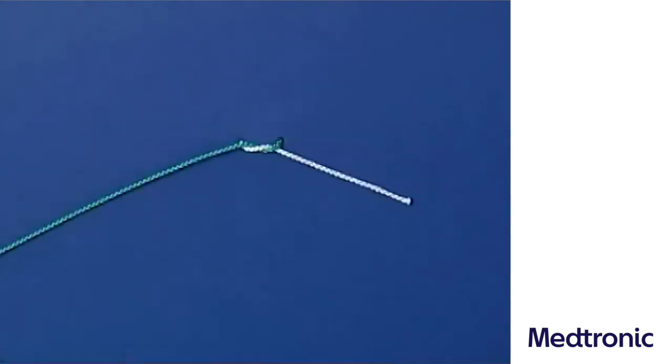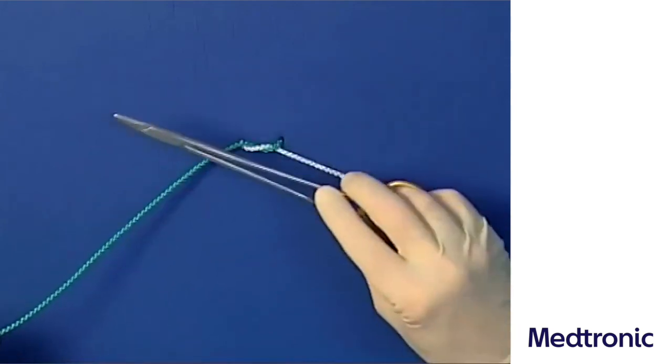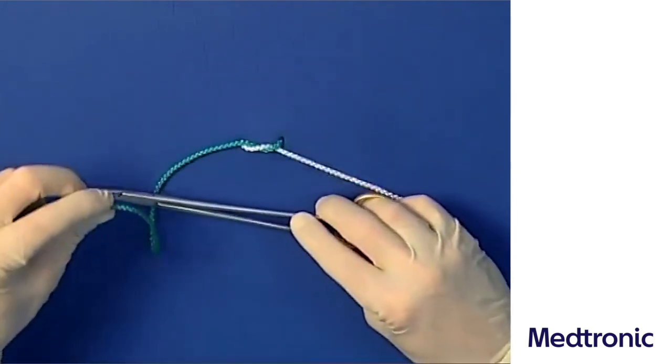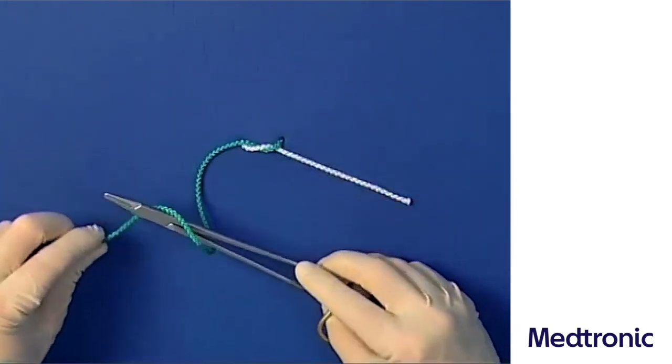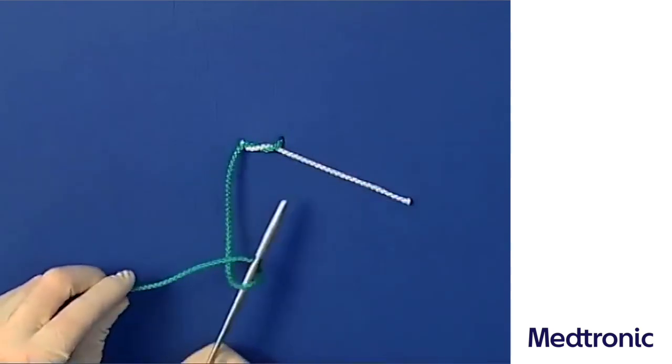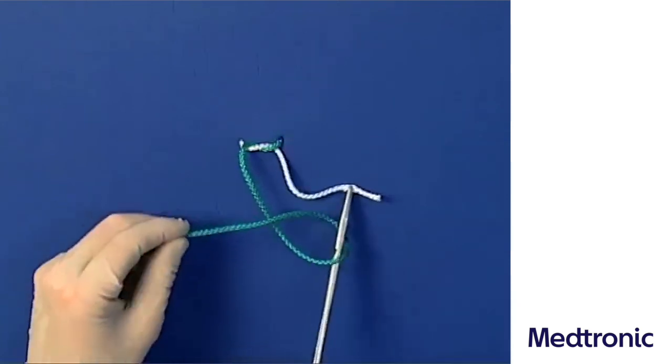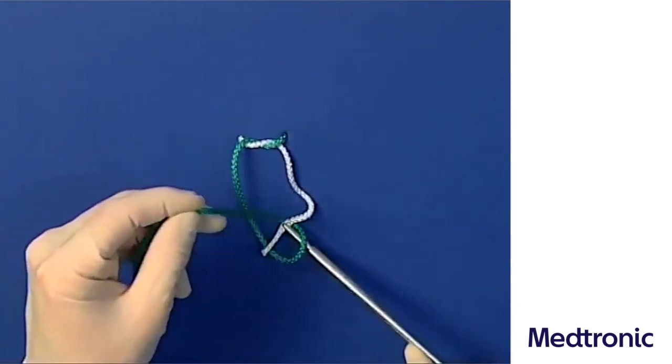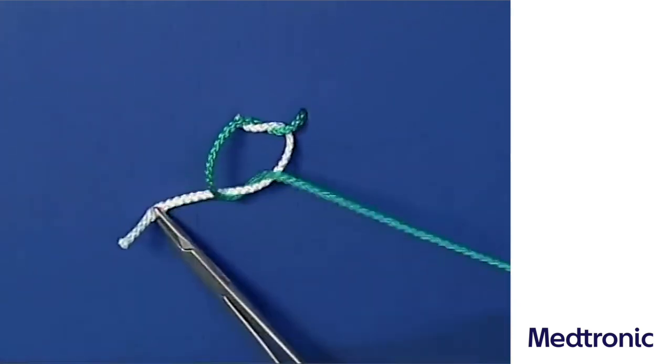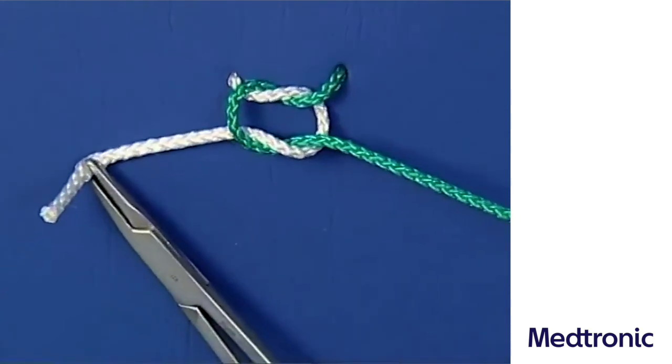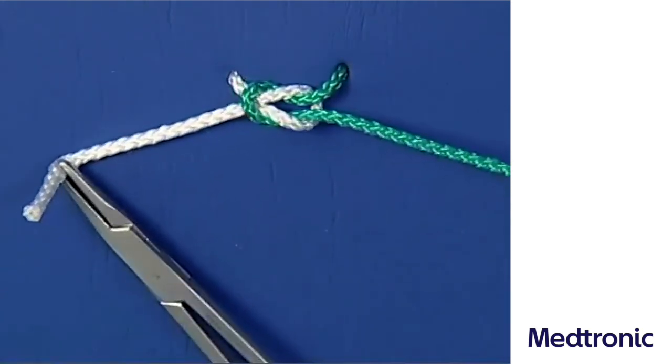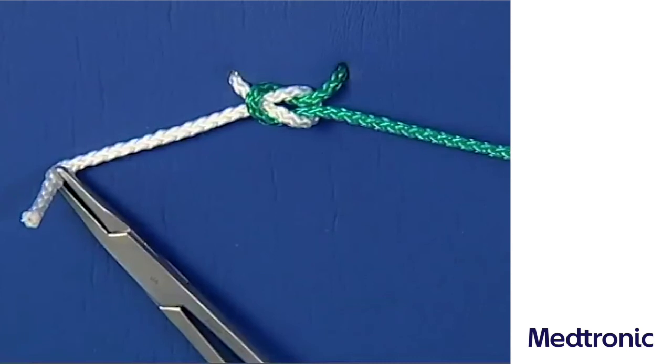The second opposed loop is now formed by leading the long suture end around the needle holder in the opposite direction. The short suture end is again grasped with the needle holder and led to the left. The long suture end is led to the right and then pulled. This is how to tie the square knot instrumentally.